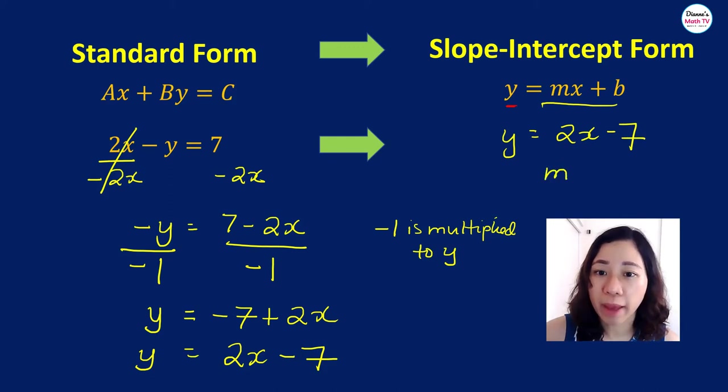So what is our slope m? Our m is 2 and our b is negative 7.